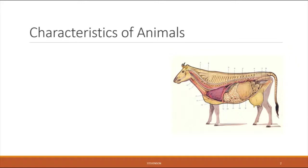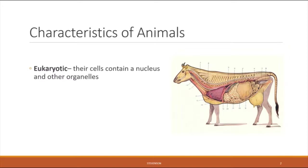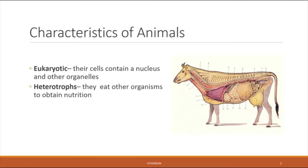We'll start by discussing some general characteristics of animals. Animals are composed of eukaryotic cells, which means that they have the larger, more complex type of cell that contains a nucleus and other organelles. All animals are heterotrophs, which means that they are consumers — they have to eat other organisms in order to obtain their nutrition. They cannot produce it themselves through photosynthesis like plants can.